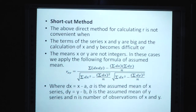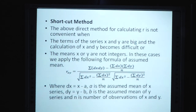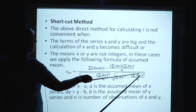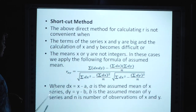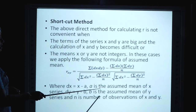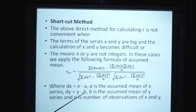Shortcut Method: The direct method is not convenient when values of x and y are large or when means are not integers. In these cases, we use the assumed mean formula: r_xy = [Σdx·dy − (Σdx·Σdy)/n] / [sqrt(Σdx² − (Σdx)²/n) × sqrt(Σdy² − (Σdy)²/n)], where dx = x−a (a = assumed mean of x series), dy = y−b (b = assumed mean of y series), and n = number of observations.